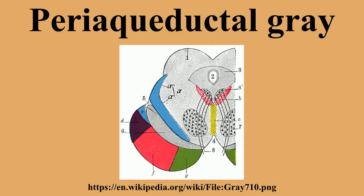The periaqueductal gray is also activated by viewing distressing images associated with pain. Three known kinds of opioid receptors have been identified: mu, kappa, and delta.